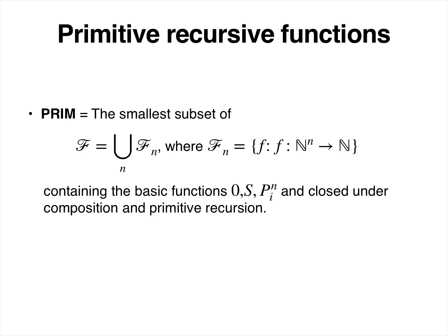The primitive recursive functions are defined to be the smallest subset of the set of all functions — where we collect all n-ary functions for all arities into one big set — containing the basic functions, and closed under composition and primitive recursion.